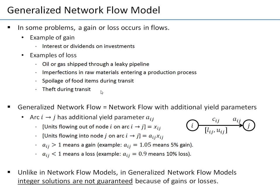There are more examples of losses: leakage in pipelines, imperfections in raw materials, or trim. When you use wood to produce furniture, you always have some trim that is waste — you had a ton of material but effectively use only 80% or 90%, and the rest is trim. There might also be spoilage of food during transit; for example, if you transport bananas over a long distance, some will ripen during transit and must be disposed of, or there might be theft or other types of losses.